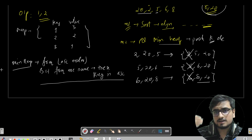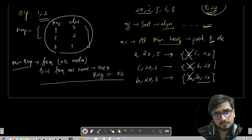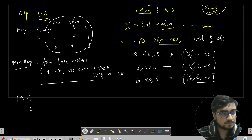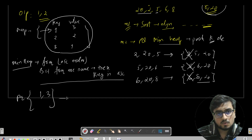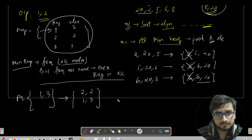In the priority queue, assume we push the first entry (1, 3). Then we push (2, 2). The PQ arranges itself so that (2, 2) is on top and (1, 3) is below — ensuring frequencies are in ascending order: 2 then 3. If we called pq.poll() now, we'd get (2, 2), the first one.